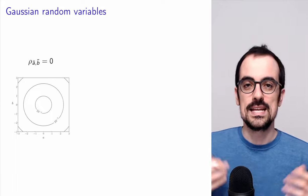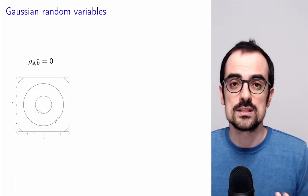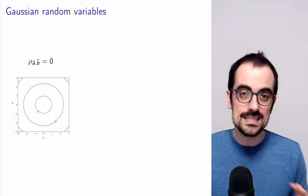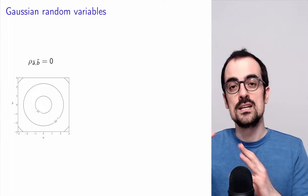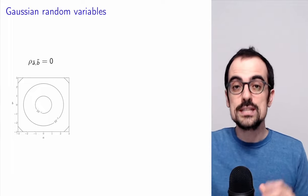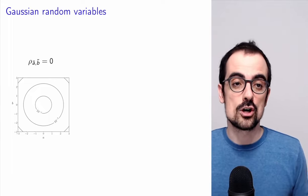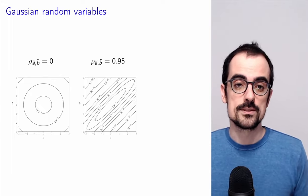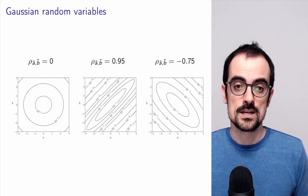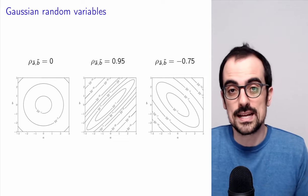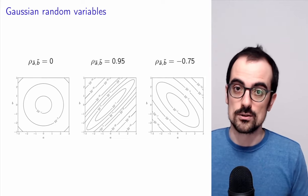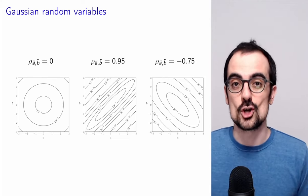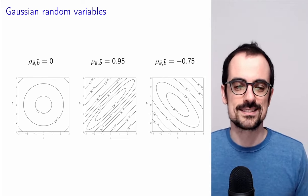For Gaussian random variables, it turns out that this correlation coefficient completely determines the joint PDF of the two random variables. But this is not the case for more general random variables that can have nonlinear dependence.